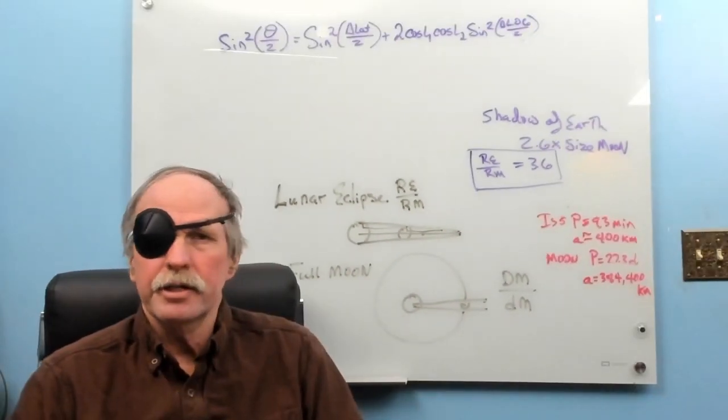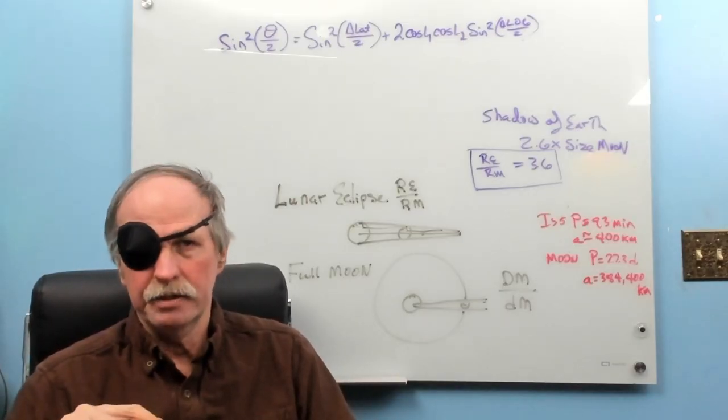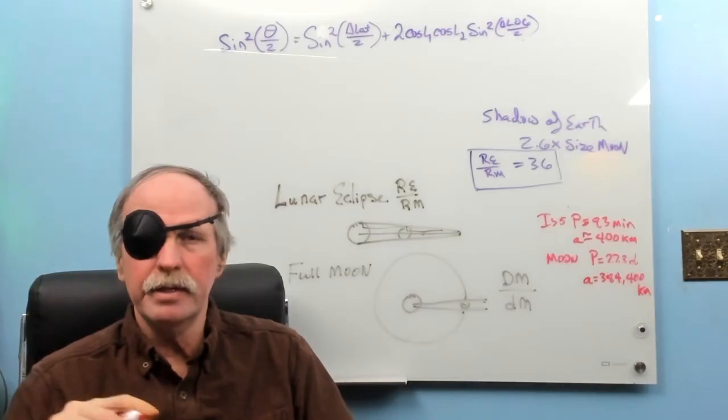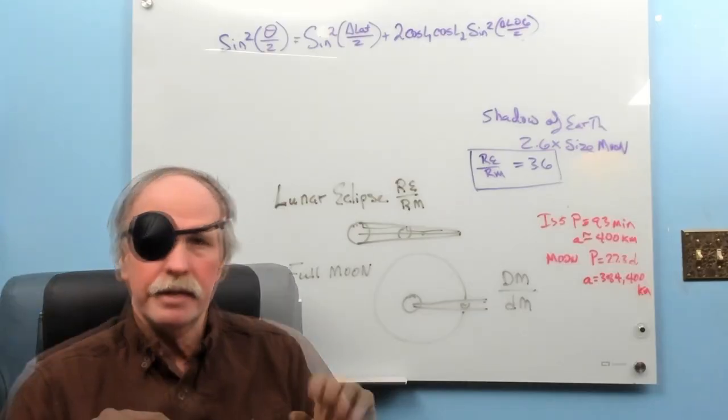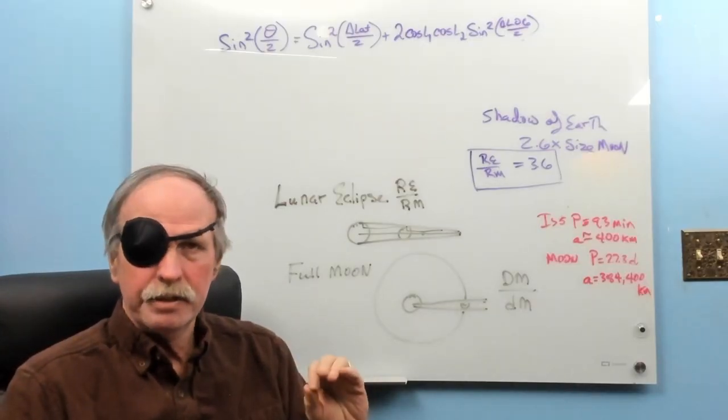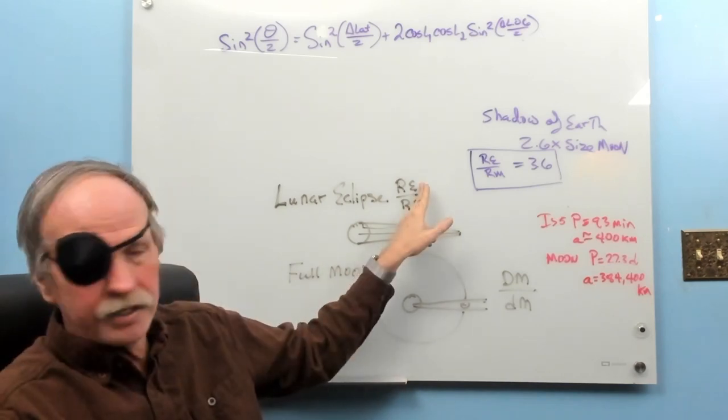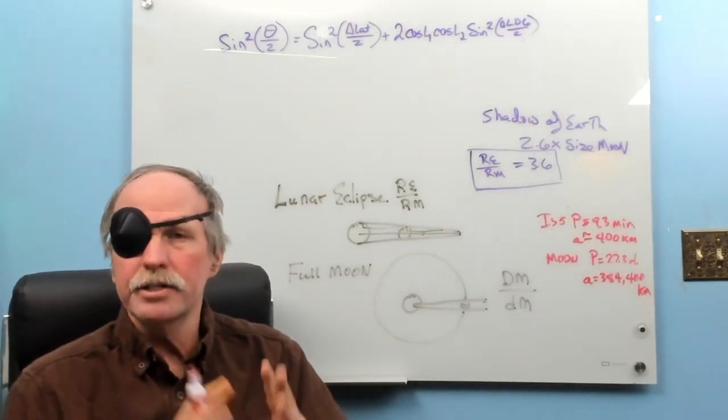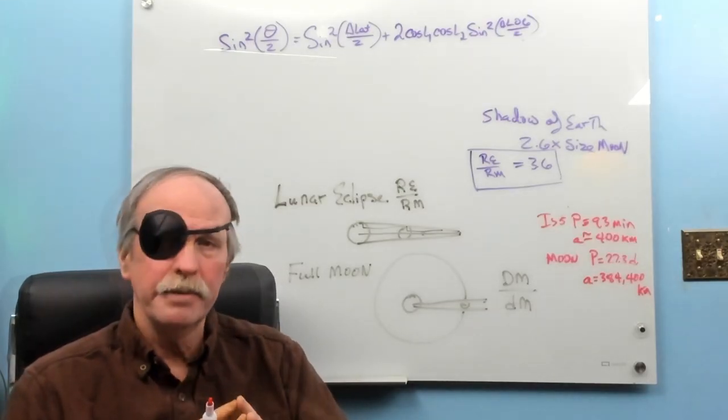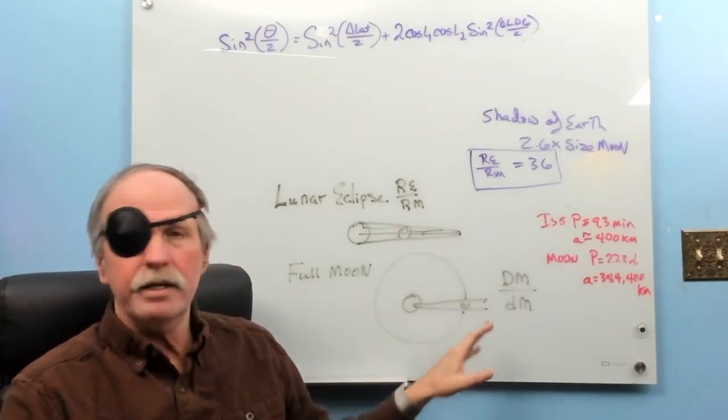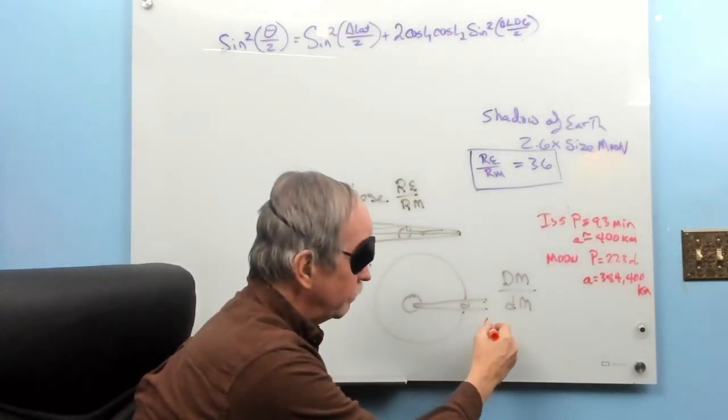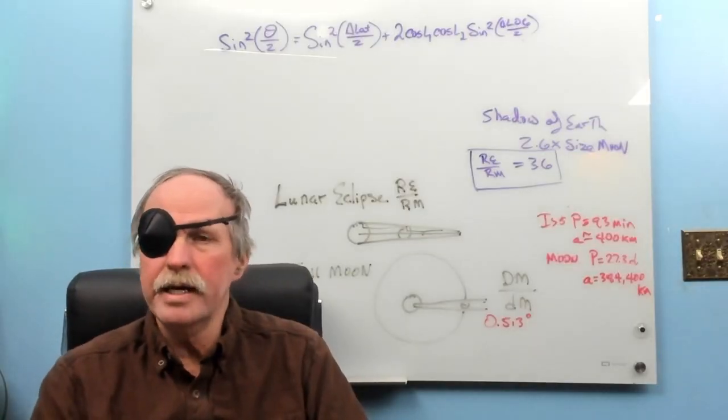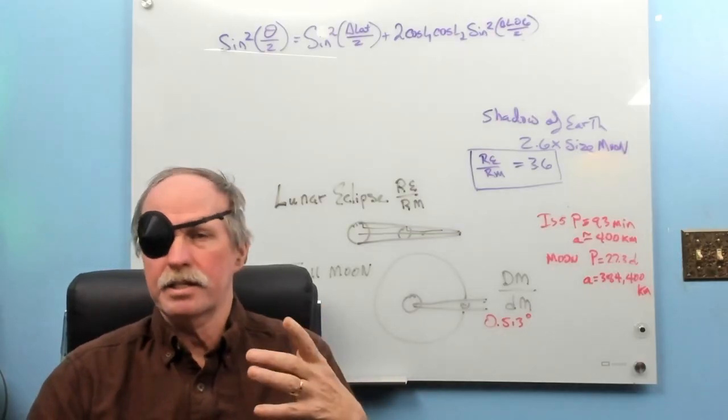Now 2300 years ago a Greek astronomer by the name of Aristarchus of Samos developed a method geometrically to determine the size and distance of the moon and the sun in relationship to the earth. Specifically he looked at the lunar eclipse and the radius of the earth to the radius of the moon was 3.6. So the earth is 3.6 times the size of the moon.